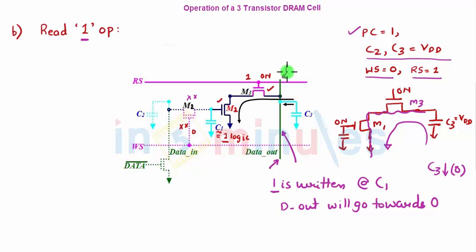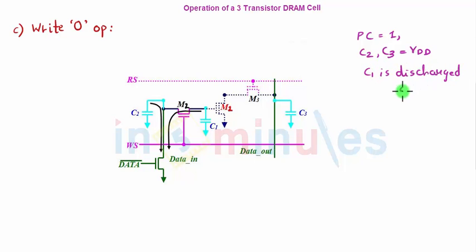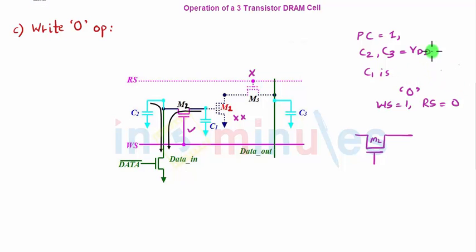Now for write 0: make PC equal to 1, so C2 and C3 equal to VDD. C1 was previously holding a logic 1 value. We want to write, so write signal is 1 and read signal is 0 — M3 is off and M2 is on. Because we want to write a 0, data bar is equal to 1, turning on that NMOS transistor. C2 has M2 on and data bar's transistor on, creating a path for C2 and C1 to discharge through transistor NX to 0.